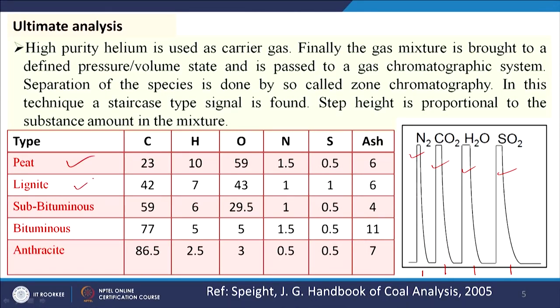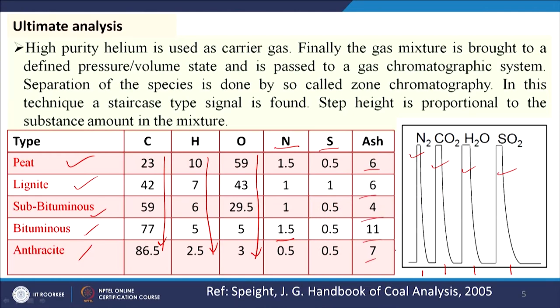Now we will see an example of ultimate analysis of different types of materials including peat, lignite, sub-bituminous, bituminous, and anthracite. Here also, hydrogen content is decreasing gradually, oxygen content is decreasing gradually, and carbon content is increasing gradually. For nitrogen and sulfur there are very small changes — around 0.5 to 1.5 — which may be within the error limit of the instrument. Ash content also does not have any specific trend, because it depends on external factors and handling of the material.